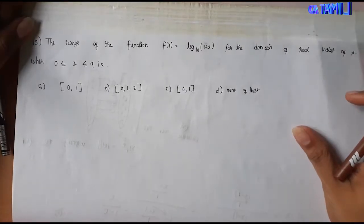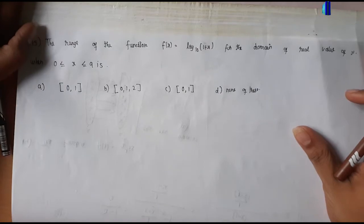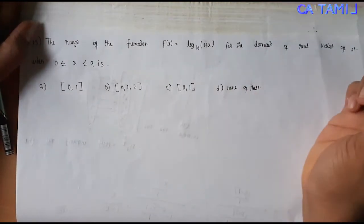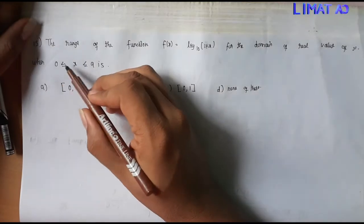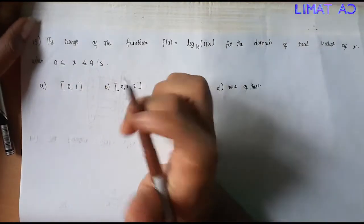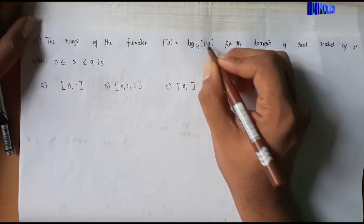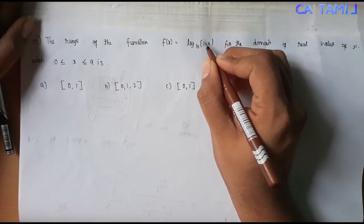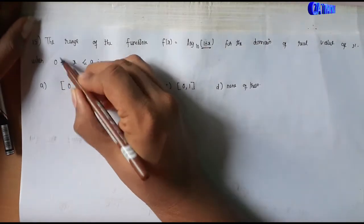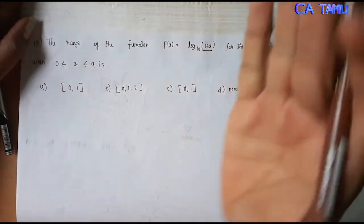Sum number 15. The range of the function f of x equals log base 10 of (1 plus x). For the domain of real value of x, then 0 less than or equal to x less than or equal to 9. So what we do is log base 10 of (1 plus x). In this, 1 plus x ranges from 0 to 9, so we take all values.